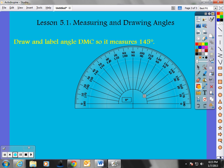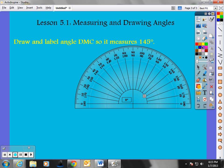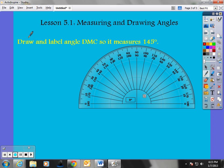First thing I'm going to do is I'm going to draw a ray. Because, going back, let me go back to my directions here. It says to draw. That's one thing I need to do. And, label. I need to label that angle DMC. That's important. So, it measures 145 degrees. And, it must measure 145 degrees.